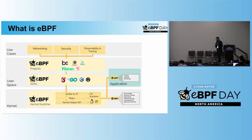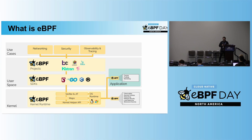Why do we need eBPF? I think we've had enough reasons up to this point. But in short, we can get great tracing abilities and observability. And of course, we can create security mechanisms in the kernel effectively and safely, without a lot of hard work.